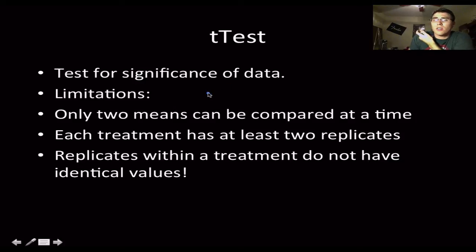There are some limits to it that only two means can be compared, two averages can be compared at a time. So for sometimes, for one of your experiments, you may end up doing two or three or four t-tests all at once for one experiment. Each treatment has at least two replicates. That's kind of obvious, because you have to have two means to compare. And then replicates within a treatment do not have identical values, because that can be problematic.